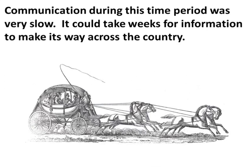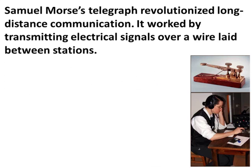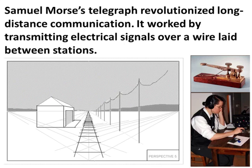Communication during this time period was very slow — it could take weeks for information to make its way across the country, usually via word of mouth or horse-drawn mail carriages. Samuel Morse's telegraph revolutionized long-distance communication by transmitting electrical signals over a wire laid between stations. Usually when they built railroads, they would also build telegraph lines, using this device to transmit messages over the lines.